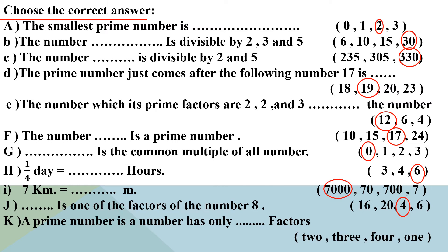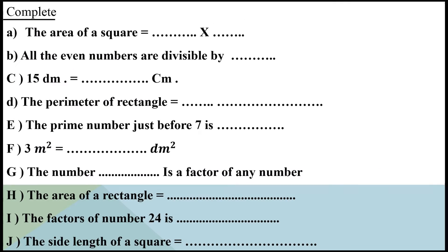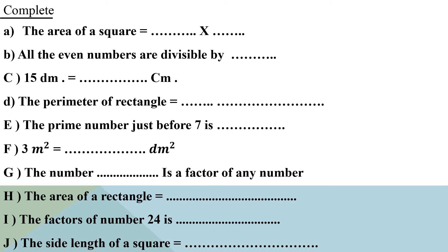Letter K: a prime number is a number that has only how many factors? Yes, it has only 2 factors. The area of a square equals side length times side length.